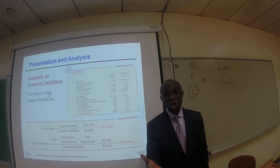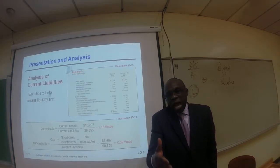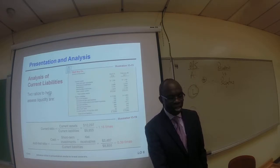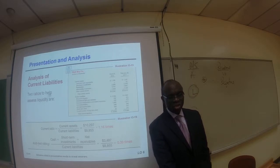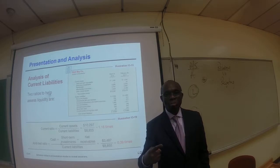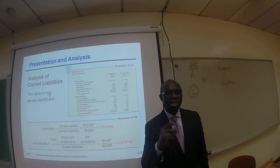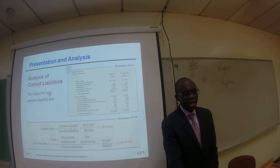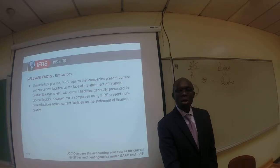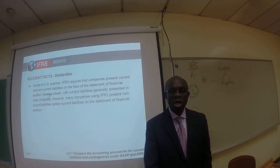Whether that ratio is good or bad depends on the average current ratio in that particular industry. There is also the acid test ratio, which measures your ability to pay current liabilities as quickly as possible — hence we call it the acid test. That is another analysis of current liabilities, and that is the end of the chapter 13 presentation.